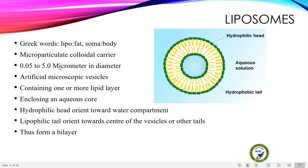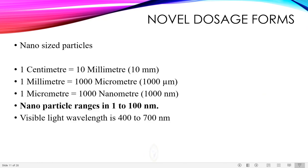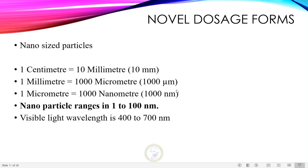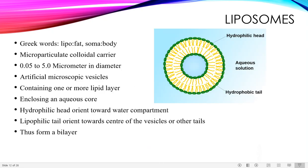Converting the size: since 1 micrometer equals 1000 nanometers, 5 micrometers equals 5000 nanometers. For 0.05 micrometers — since 0.1 micrometer equals 100 nanometers — 0.05 micrometer equals 50 nanometers. So the size range is 50 nanometers to 5000 nanometers, or simply 0.05 to 5 micrometers.